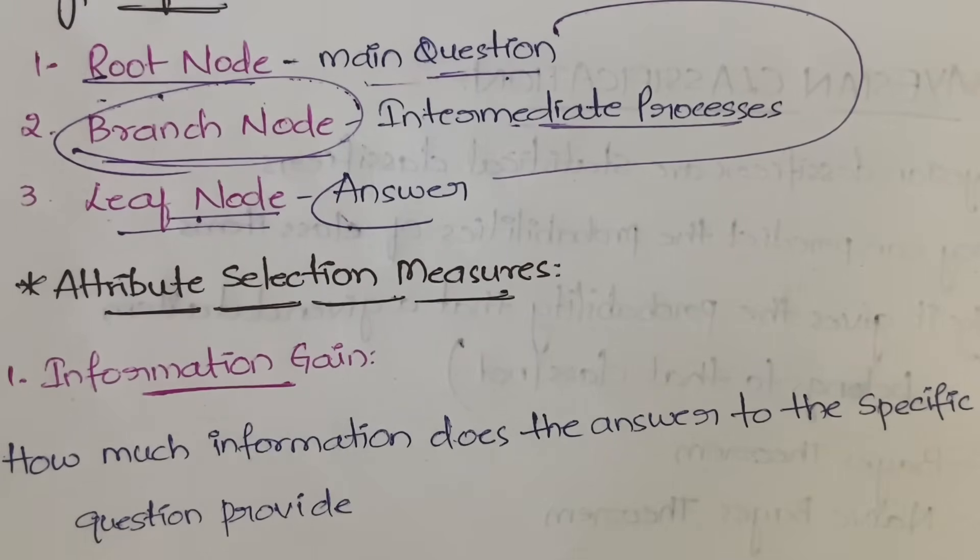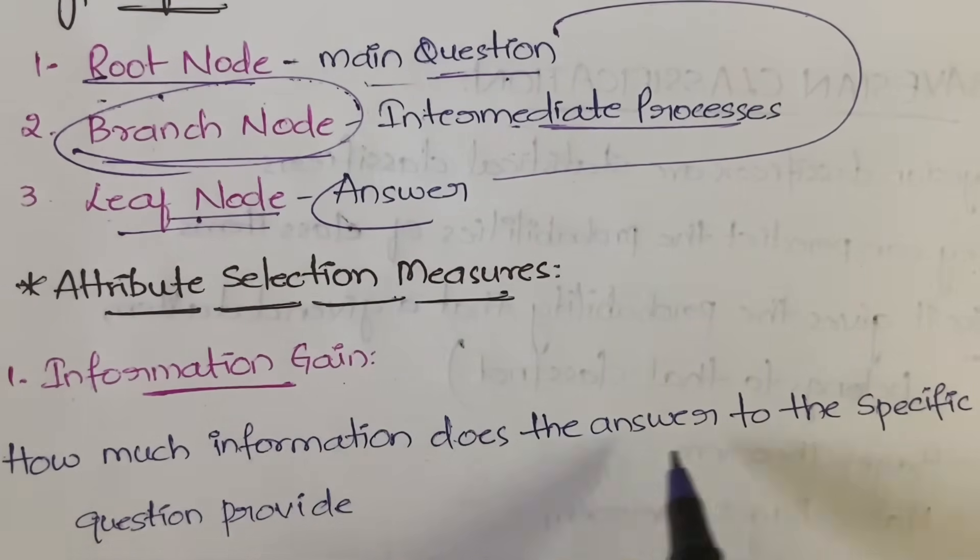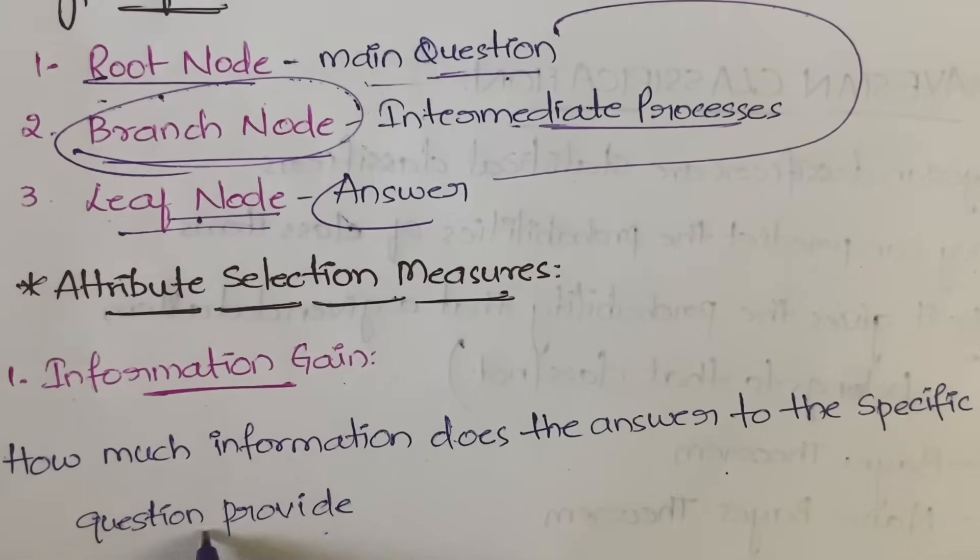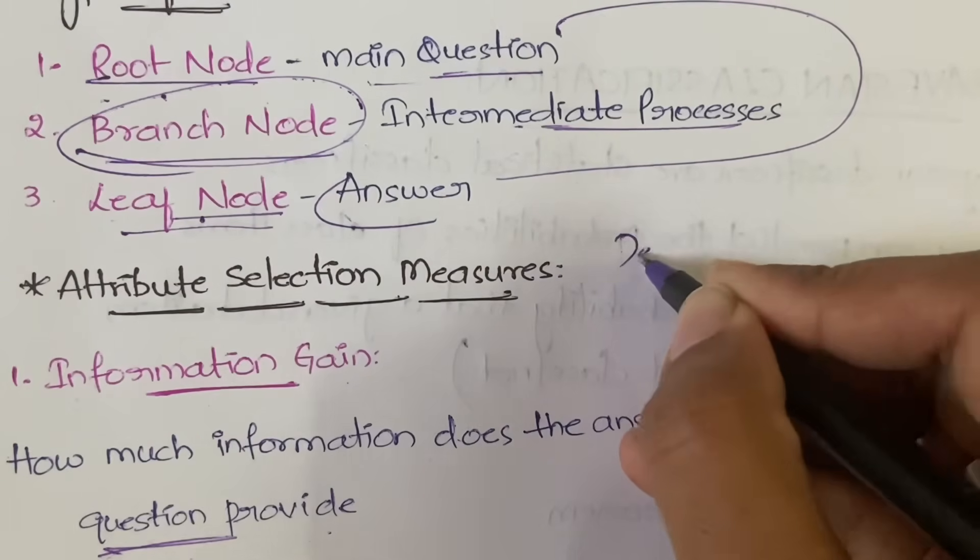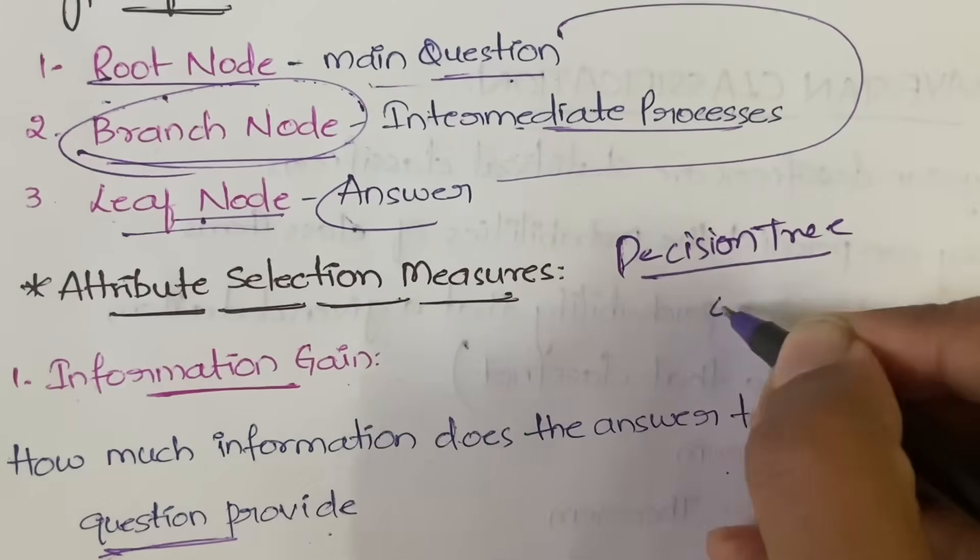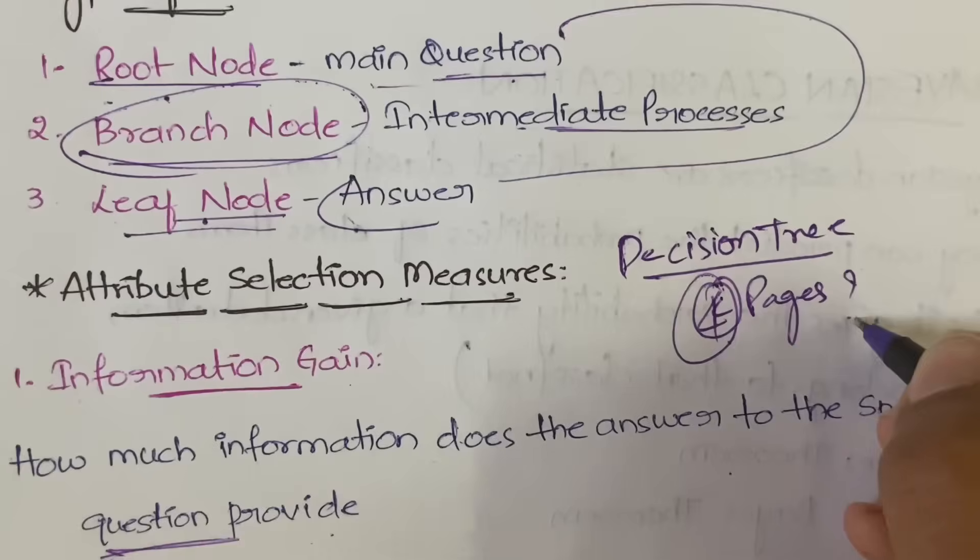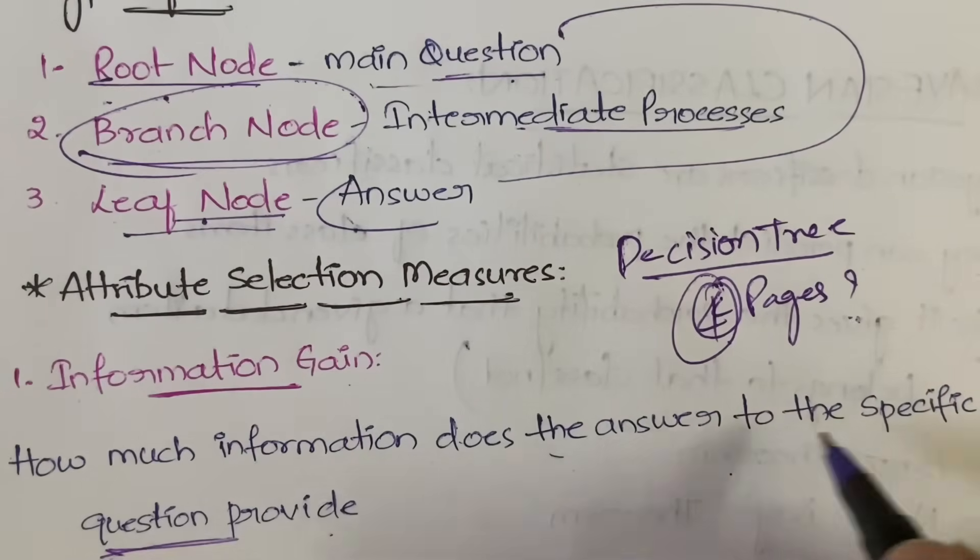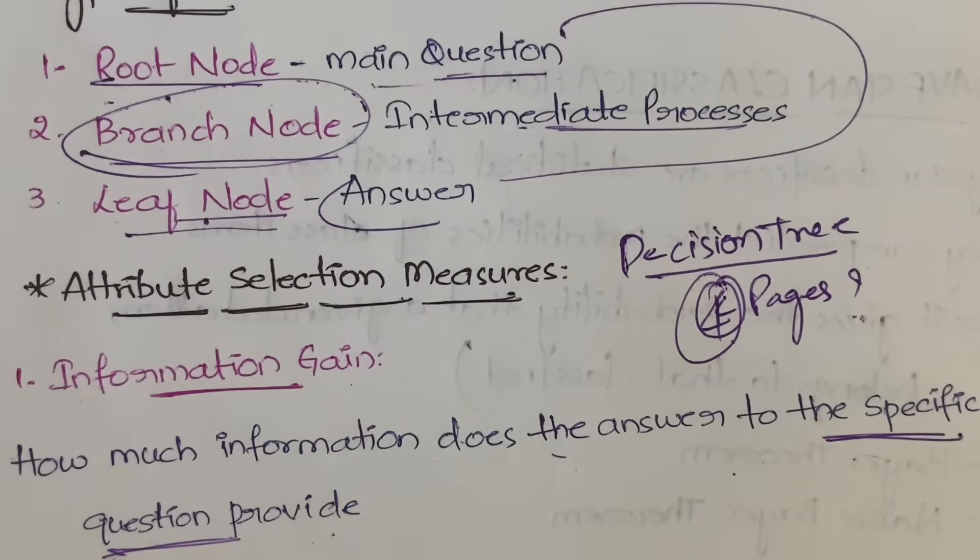Information gain is how much information does the answer to the specific question provide. Suppose in the exam you got a question to write something about decision tree, and you have written four pages of answer. In these four pages how much is actually specific content, how much is actually the real content you are giving? Four pages doesn't mean that you have written everything perfectly. You might have written some story.